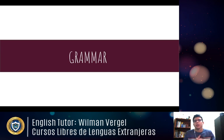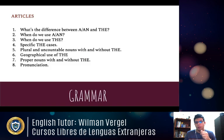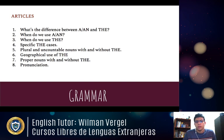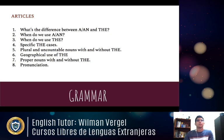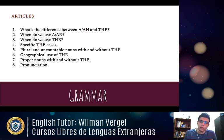Now we're going to go to the grammar part. What are we going to learn? We'll talk about articles. The agenda: number one, the difference between a, an, and the. Number two, when do we use a and an. Number three, when do we use the. Number four, specific cases. Number five, plural and uncountable nouns with and without articles. Number six, geographical use of the. Number seven, proper nouns with and without the article. And number eight, pronunciation — we're going to review rules you already know.